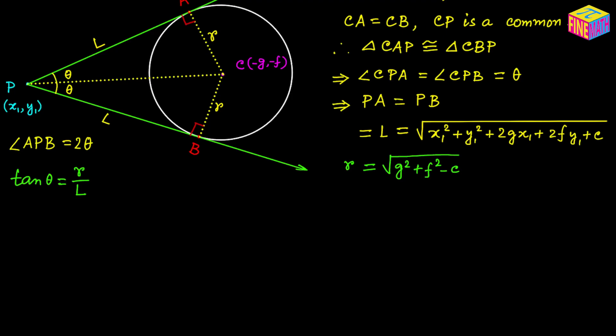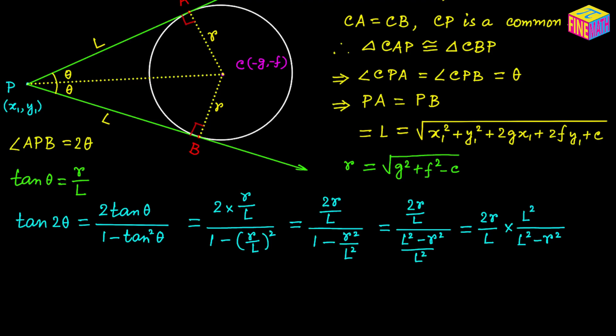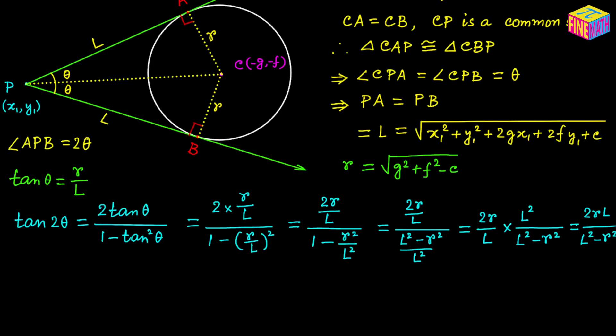R and L are both known, so tangent of theta is known. The double angle formula gives us: tangent of 2 theta equals 2 times tangent theta over 1 minus tangent squared theta. Substituting tangent theta equals R over L and simplifying, we get: tangent of 2 theta equals 2RL over L² minus R². One L cancels in numerator and denominator, leaving 2RL in the numerator and L² minus R² in the denominator.